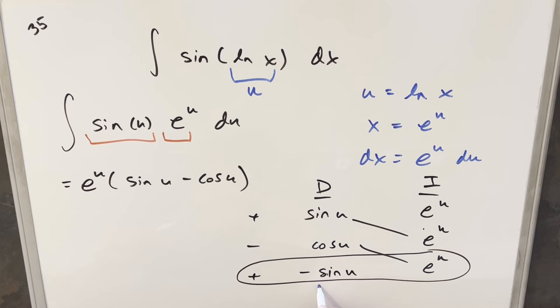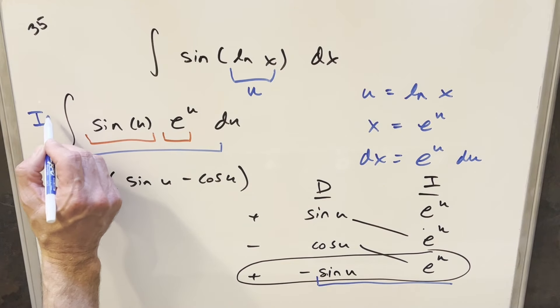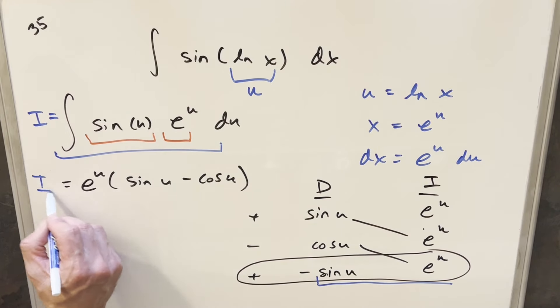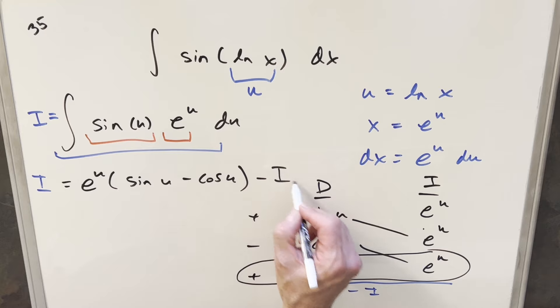But now for this integral in the last row, just notice that what we have here, without the minus sign, is exactly our integral. So what I can do is label this integral I right here, and we'll label the whole thing I. So then this here is going to give me a minus I.